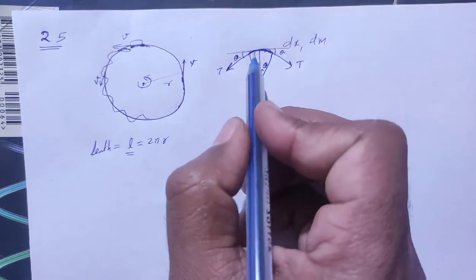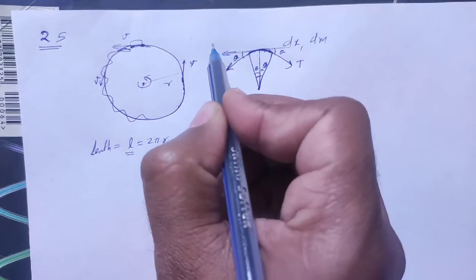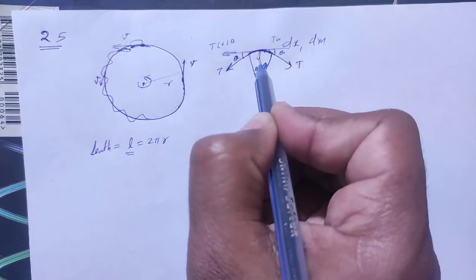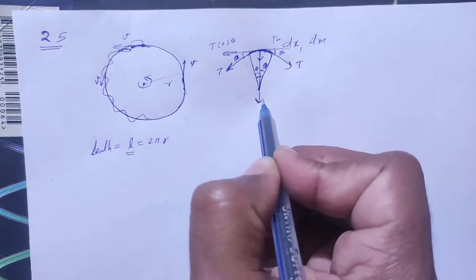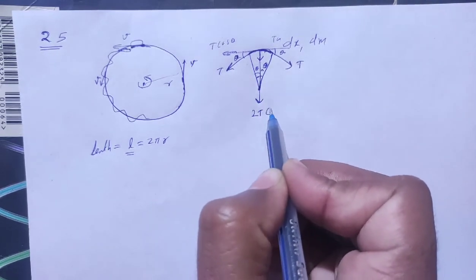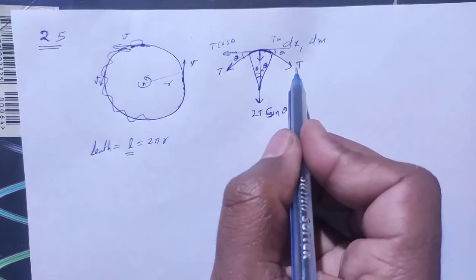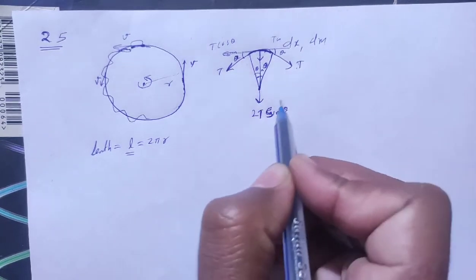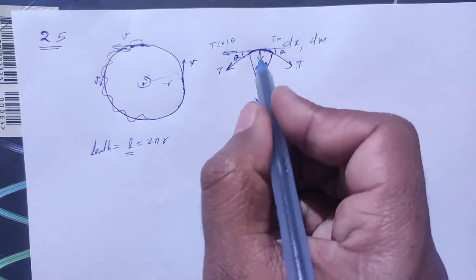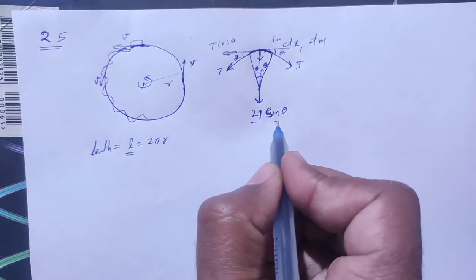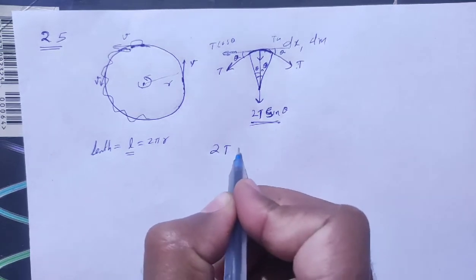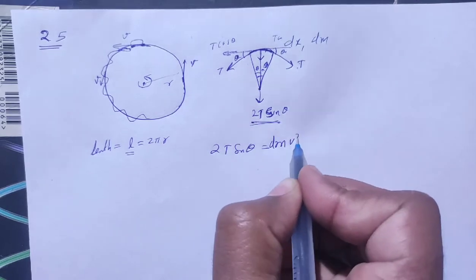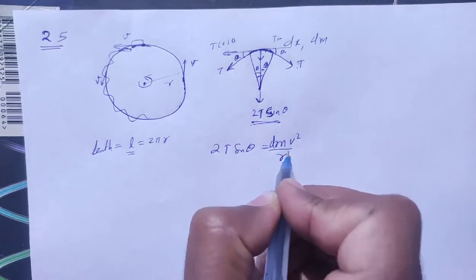The tension component is T cosθ, and this side is also T cosθ. The net inward force is 2T sinθ. This 2T sinθ is directed toward the center and provides the centripetal force. So 2T sinθ equals the centripetal force.